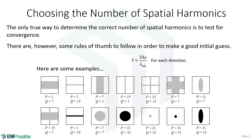A key question in implementation is: how many spatial harmonics are enough? There is no equation to tell you. The definitive answer is to check for convergence — run a simulation, get your answer, increase the number of spatial harmonics, run it again, and keep doing that until the answer isn't changing much anymore. You want simulations to run fast yet give accurate enough results, so you decide where you are on that convergence curve.